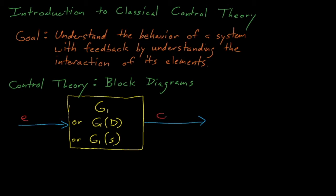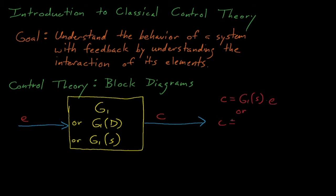G1 operates on our input signal E and produces the output signal C, which is noted simply by G1 times E.